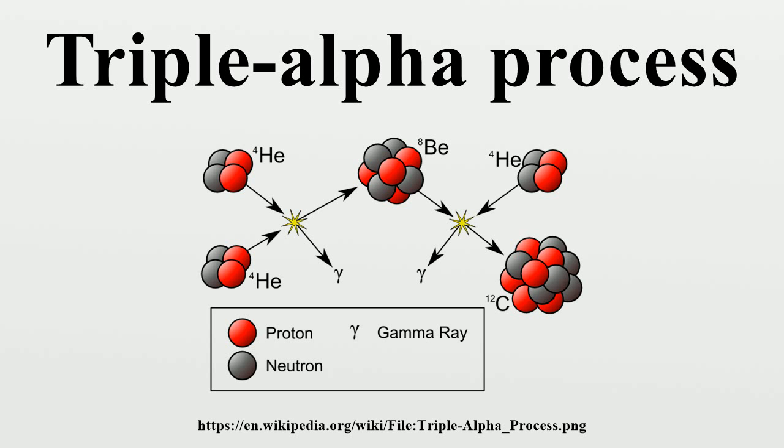The decay lifetime of a 8Be nucleus is four orders of magnitude larger than the time for two 4He nuclei to scatter. An excited state of the 12C nucleus exists just above the energy level 8Be plus 4He.